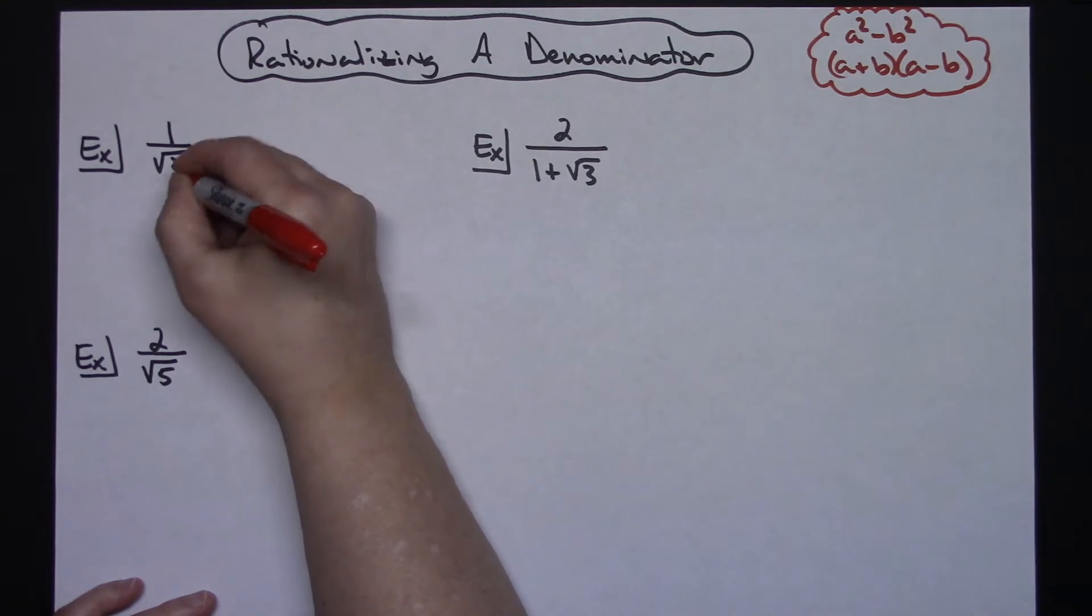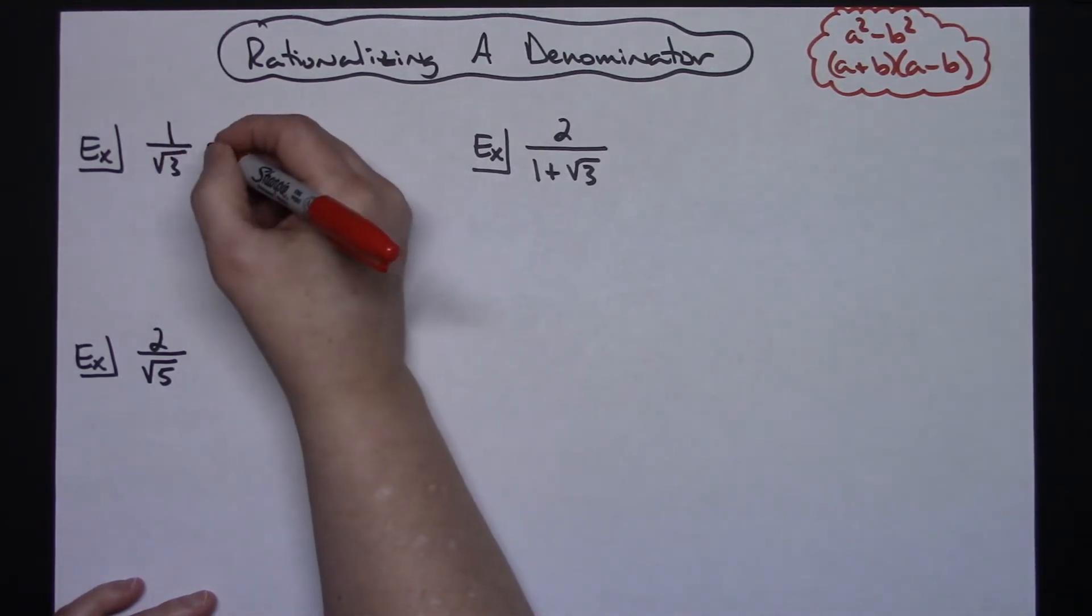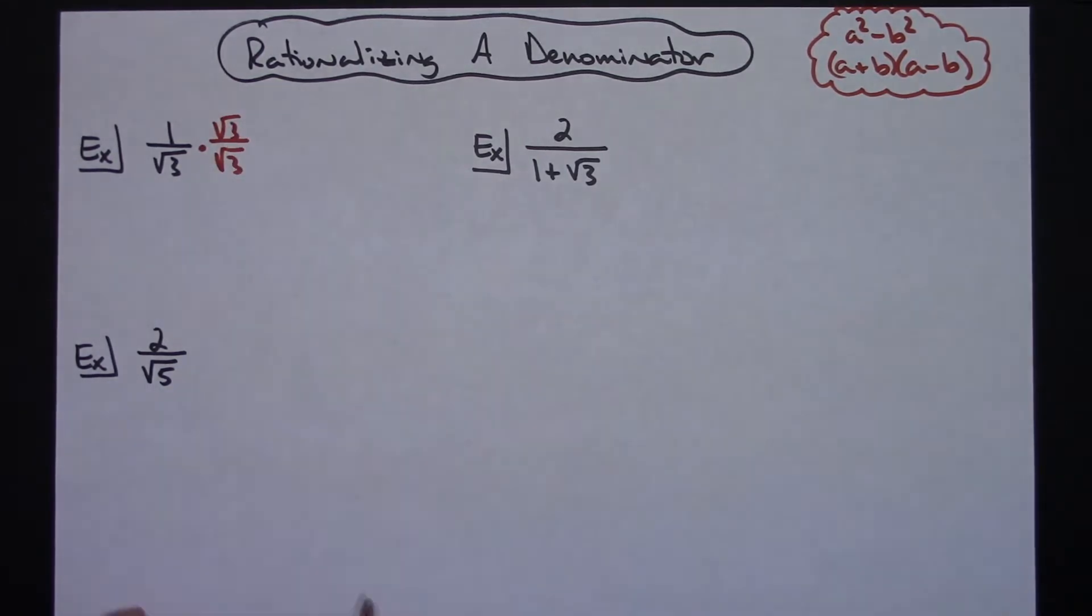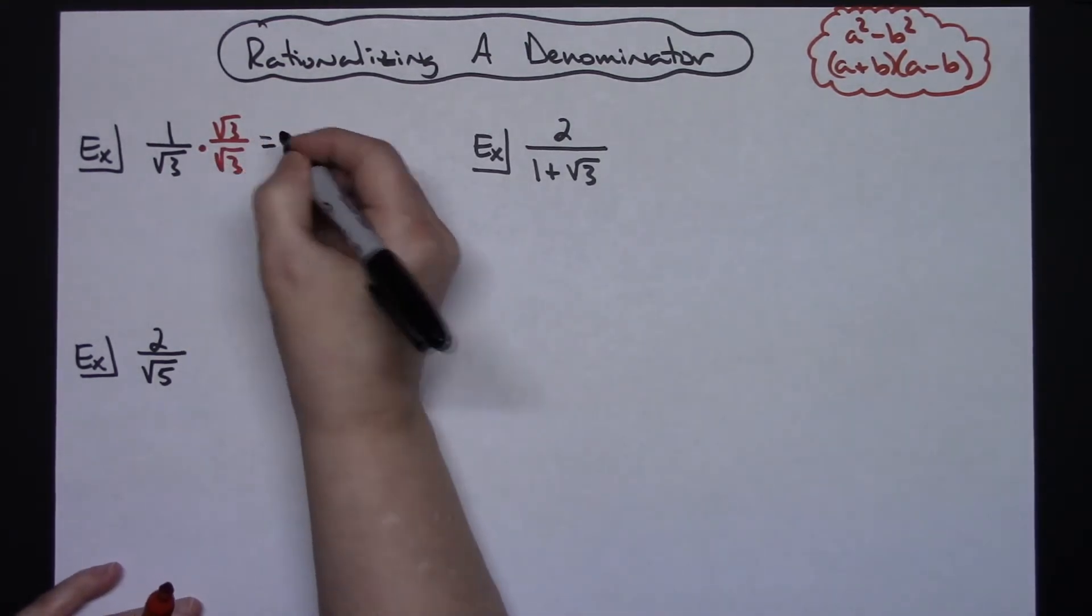And then it ultimately gets rid of that square root that's in the bottom. So because the bottom is square root of 3, I'm going to multiply by the square root of 3 over the square root of 3. Anything over itself is 1, so I'm multiplying this by 1. I am NOT changing the value of this.